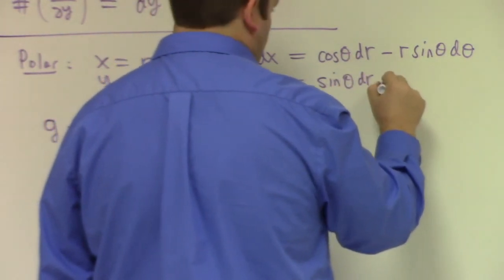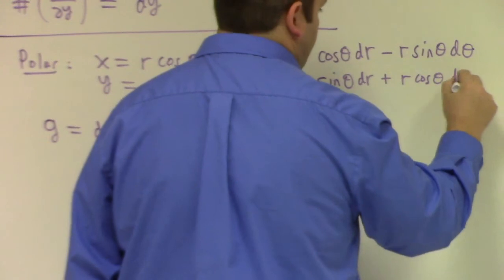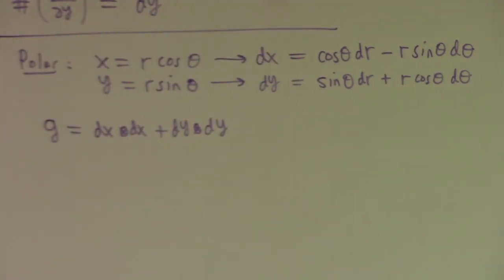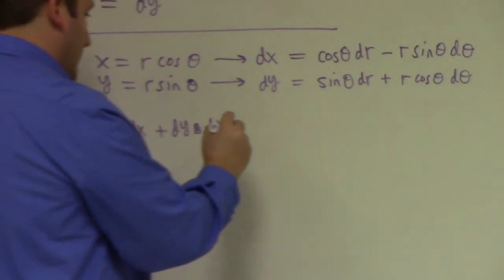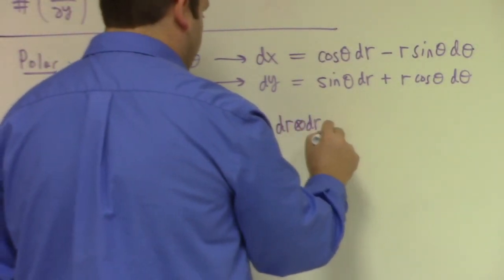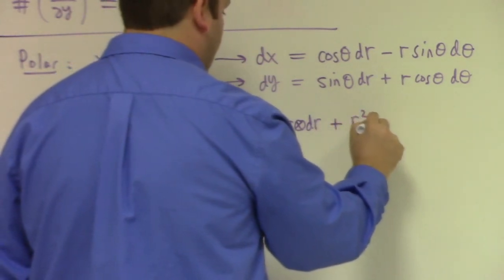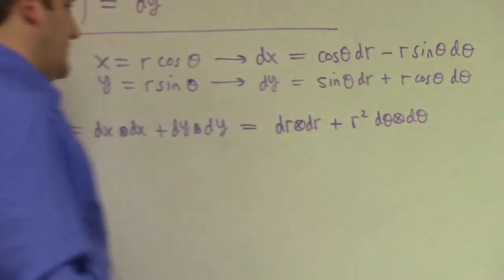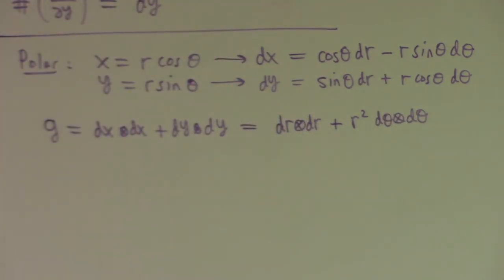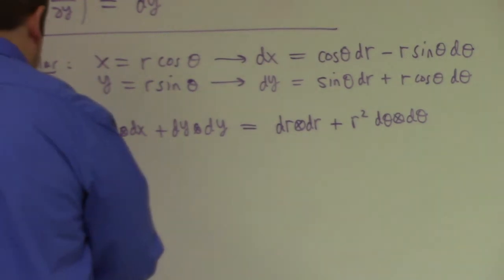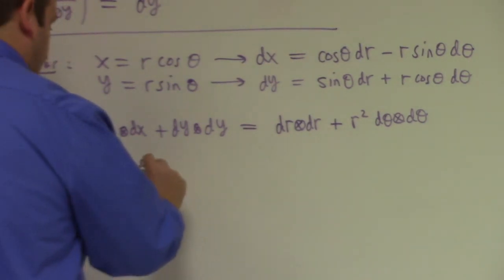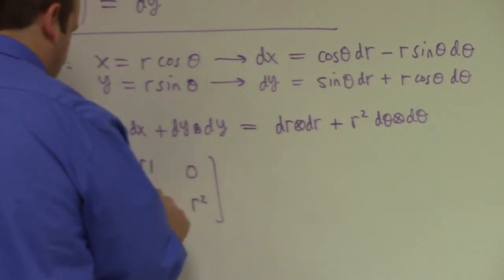When you substitute x = r cos theta and y = r sin theta into g = dx tensor dx + dy tensor dy and work it out, the mixed terms cancel (sine squared plus cosine squared is 1), and you're left with g = dr tensor dr + r^2 d theta tensor d theta. So the metric has matrix entries 1 and r^2 in polar coordinates. The inverse metric is then diagonal with entries 1 and 1/r^2.